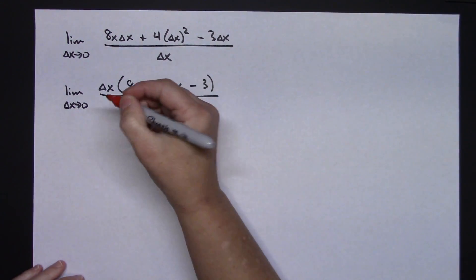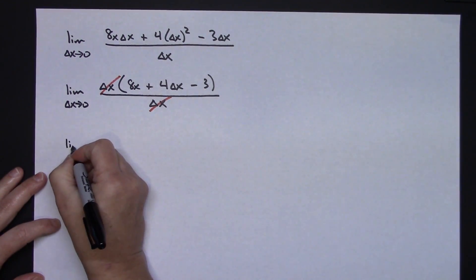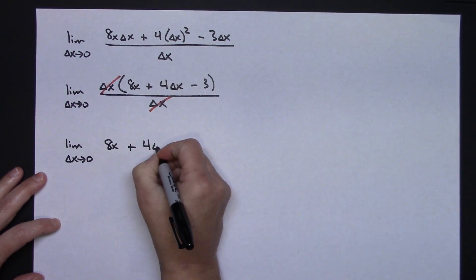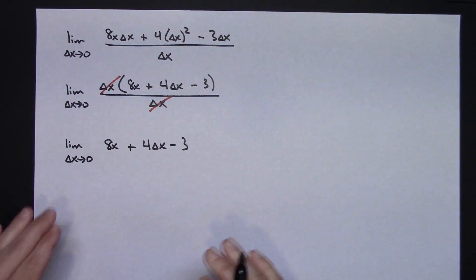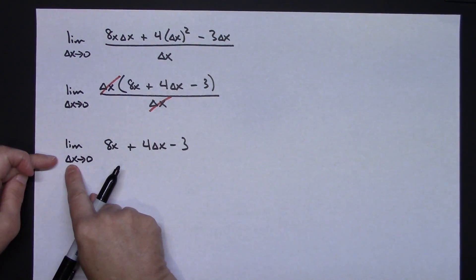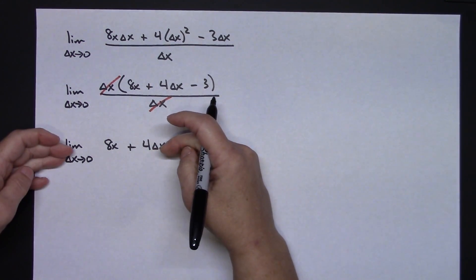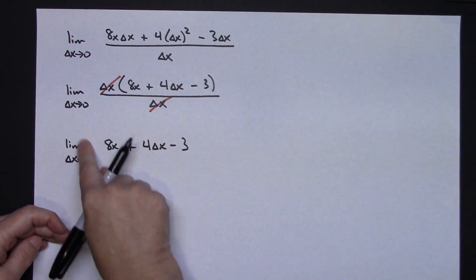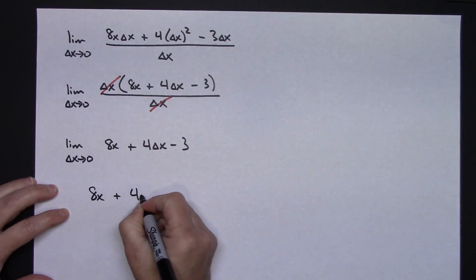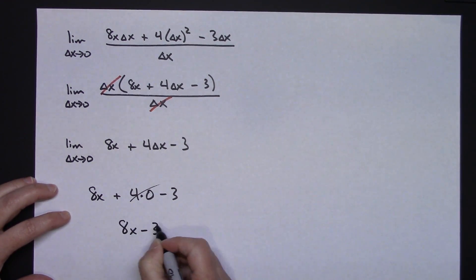Those delta x's cancel, so I have the limit as delta x approaches 0 of 8x + 4·delta x - 3. At this point I've done all the algebra simplification I can, so I'm ready to take the limit — I let delta x approach 0 and substitute 0 in. The limit notation goes away, and my next line is 8x + 4(0) - 3, which gives a final answer of 8x - 3.